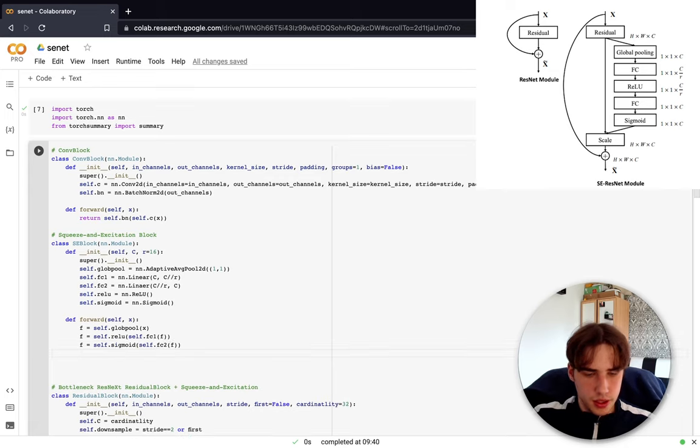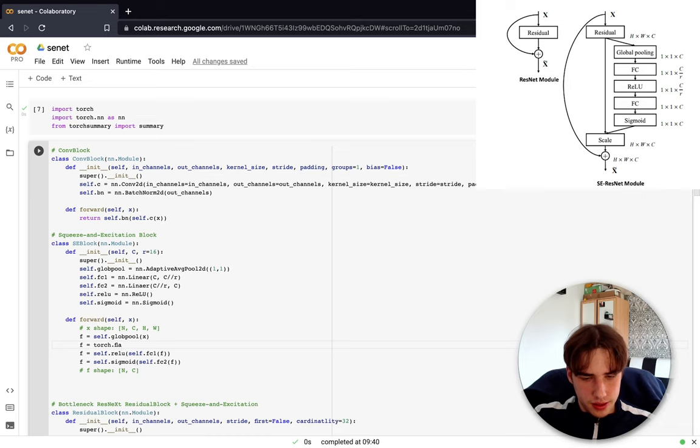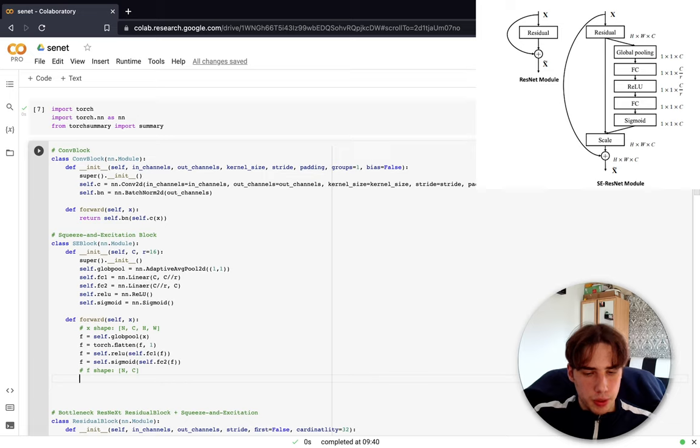fc2(f). The x shape will be n is the number of examples in a batch, c is channels and the size of the feature map, and f shape will be n and c. We also need to flatten it. The f shape is going to be n, c. What we need to do is we need to multiply it with x - we need to reshape it, but we can do it in a different way, so we just add none and none, and what it basically does is just adds two another dimensions here.